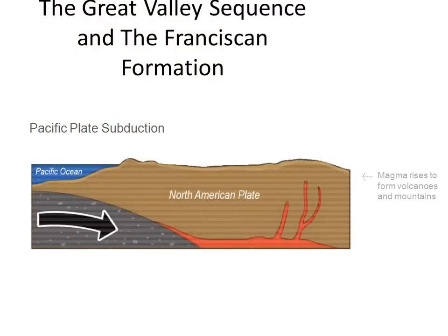Over time, the mountains eroded and reformed, helping to create California. Geologists call this the Great Valley Sequence, the remains of which are generally found on the east side of the Napa Valley.